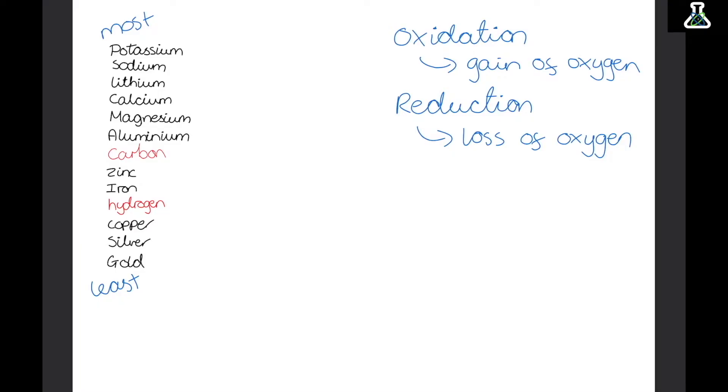So any metal above hydrogen in the reactivity series will react with dilute acids. Potassium at the top will react really vigorously. It will have a really big reaction. And then iron which is just above hydrogen will react much more slowly.